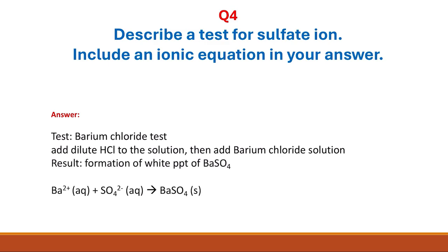The ionic equation is: barium ion (aqueous) plus sulfate ion (aqueous) gives barium sulfate (solid), as it is a precipitate — Ba²⁺(aq) + SO₄²⁻(aq) → BaSO₄(s).